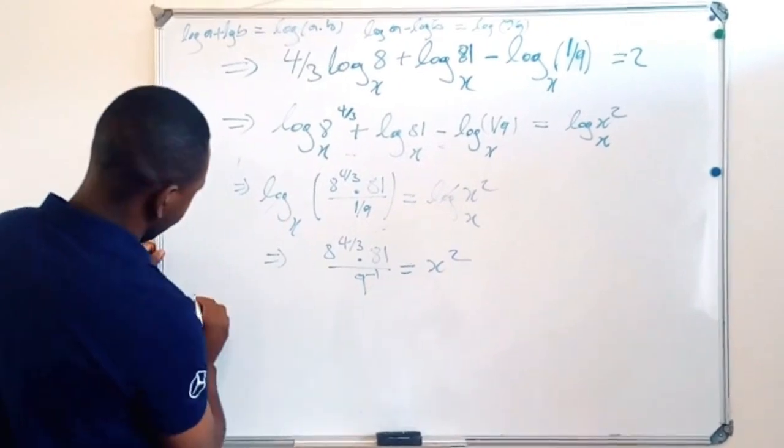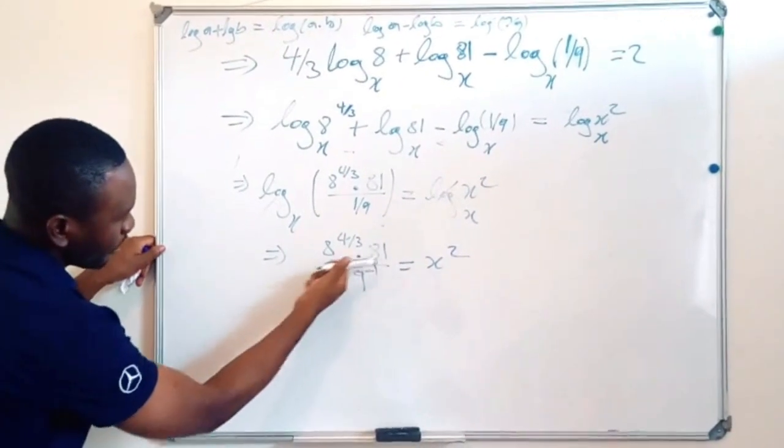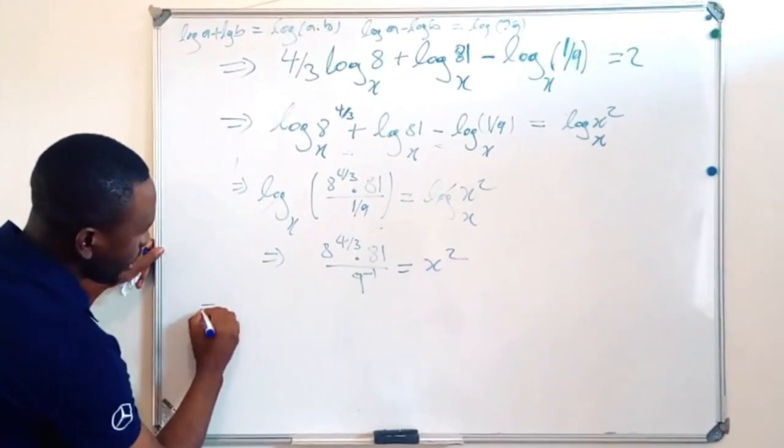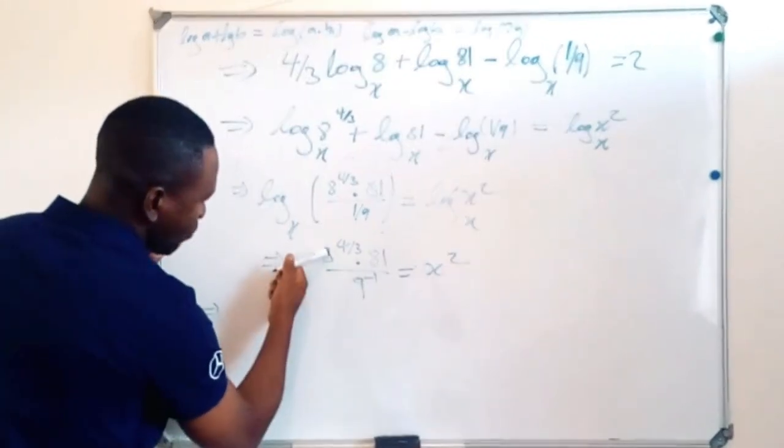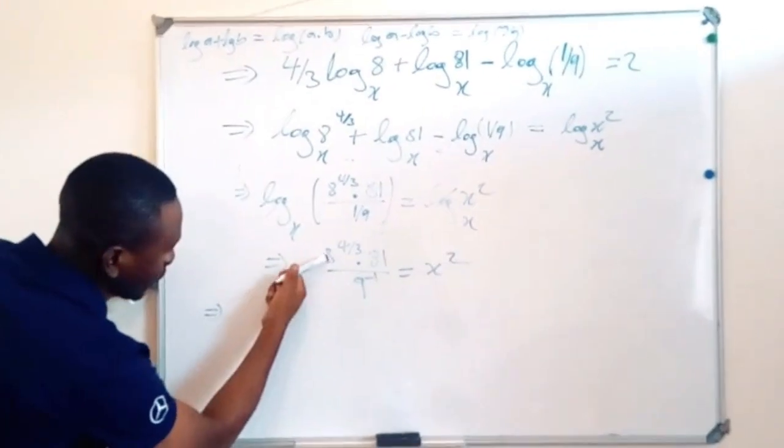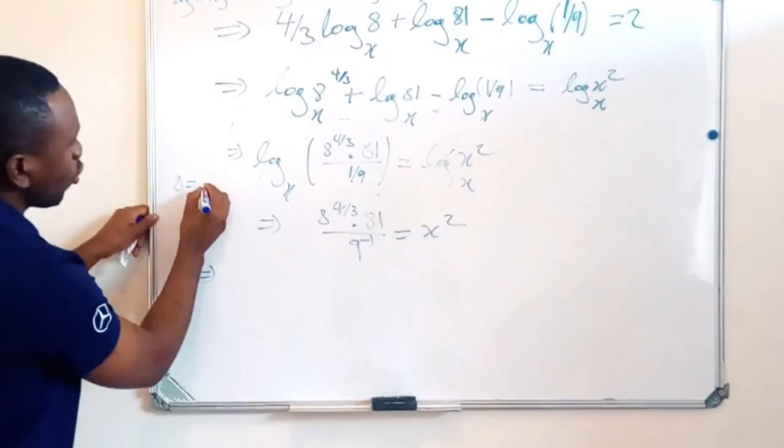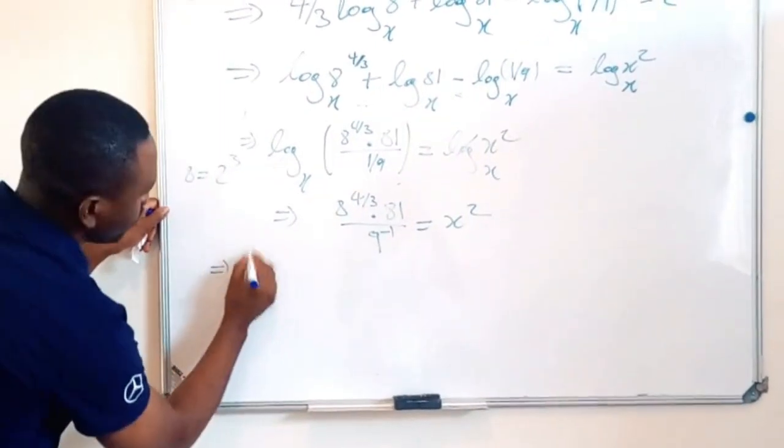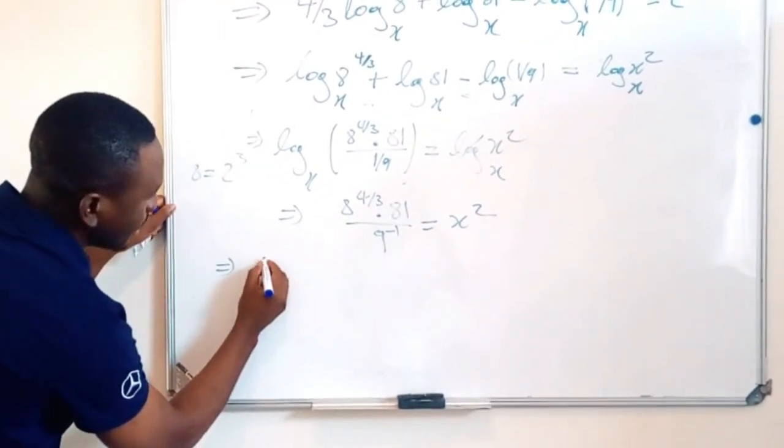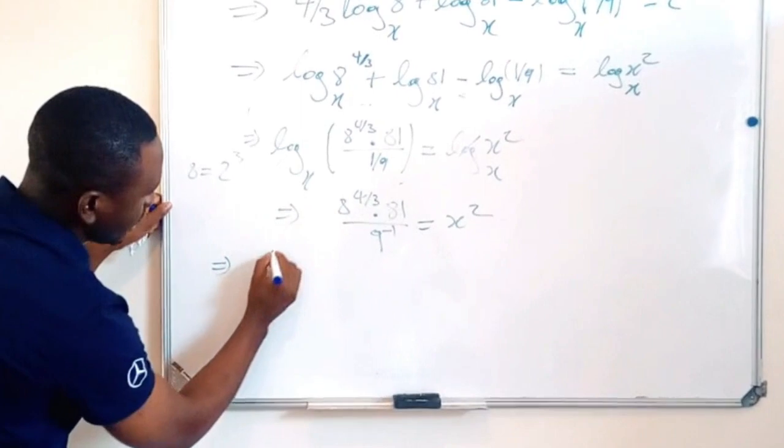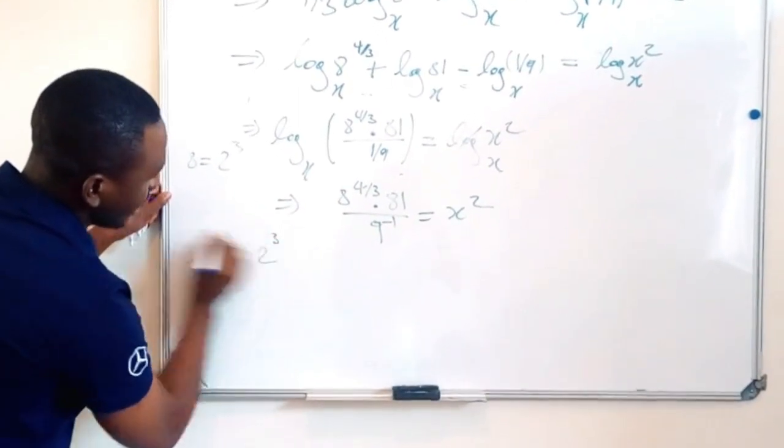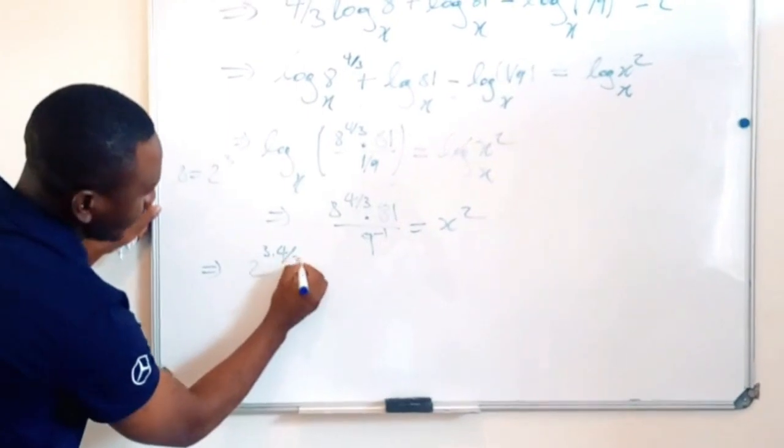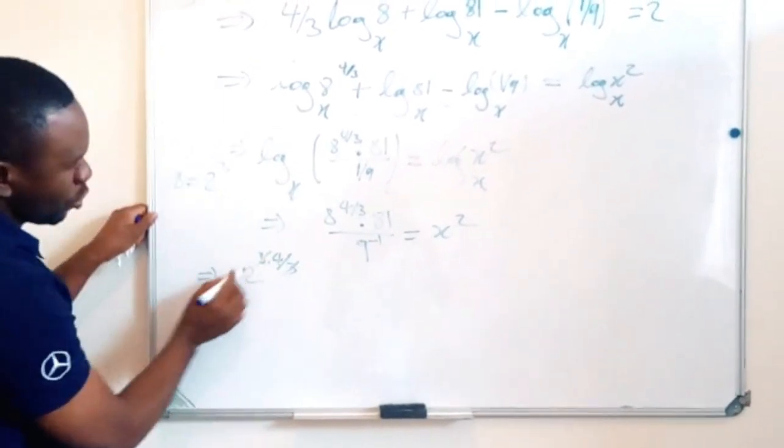So then, for my space here, what I'm going to do is I can put it this way. So 8 is equal to 2 exponent 3, right? So which means I'm going to have 2 exponent 3 times 4 divided by 3.